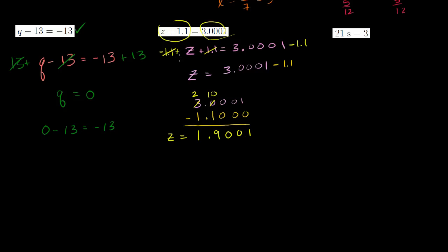We can verify: z plus 1.1, that is 1.9001 plus 1.1. Adding: 9 plus 1 is 10, carry the 1, and 1 plus 1 plus 1 is 3. We get 3.0001. That's also a good review of adding and subtracting decimals.